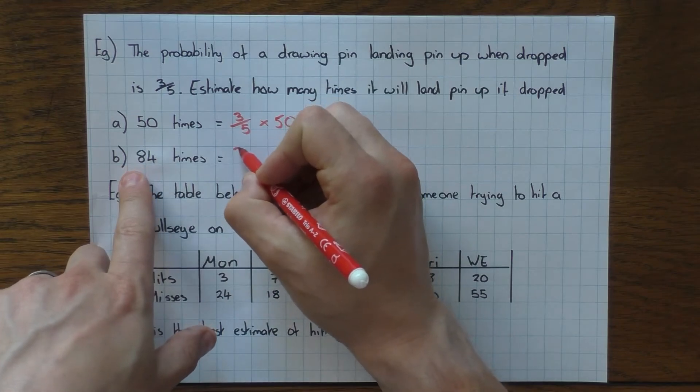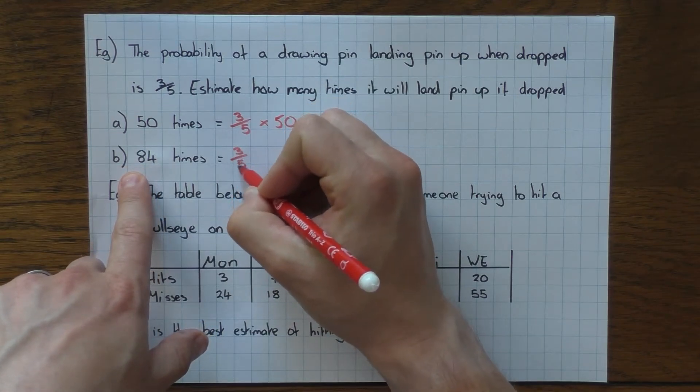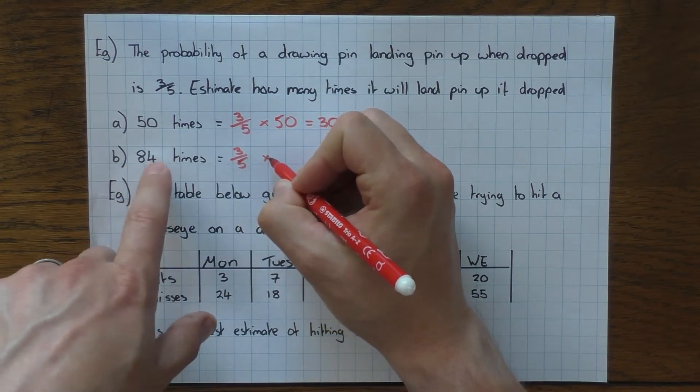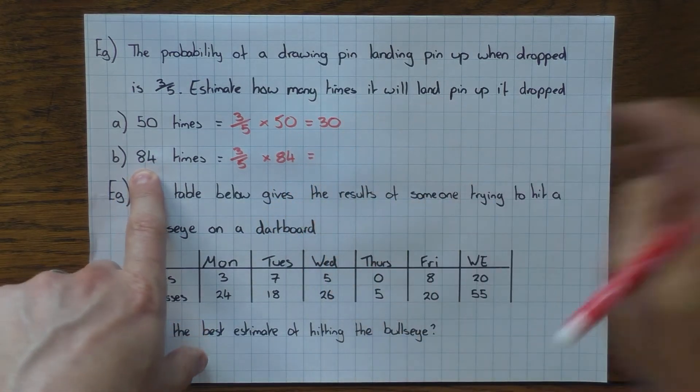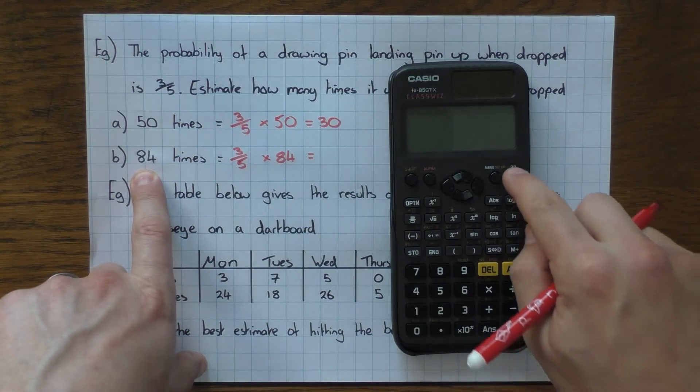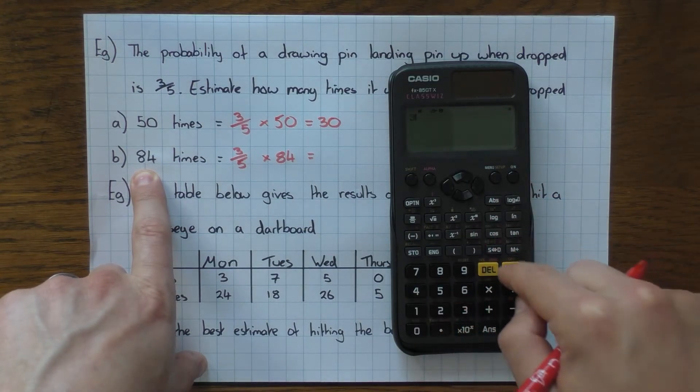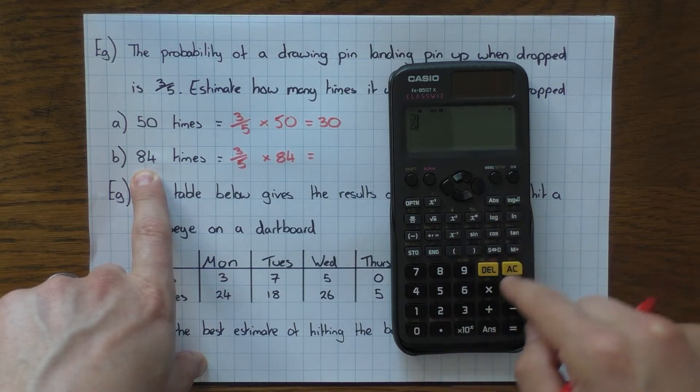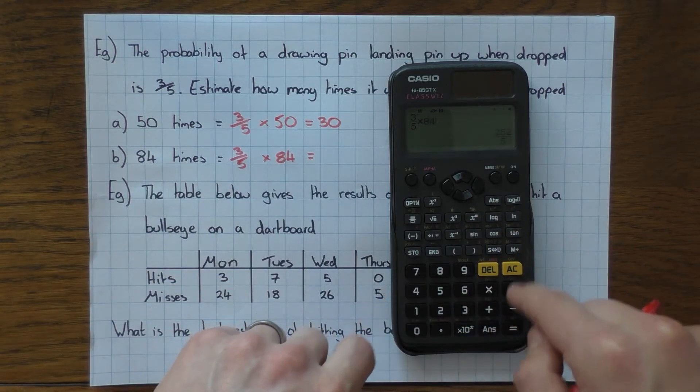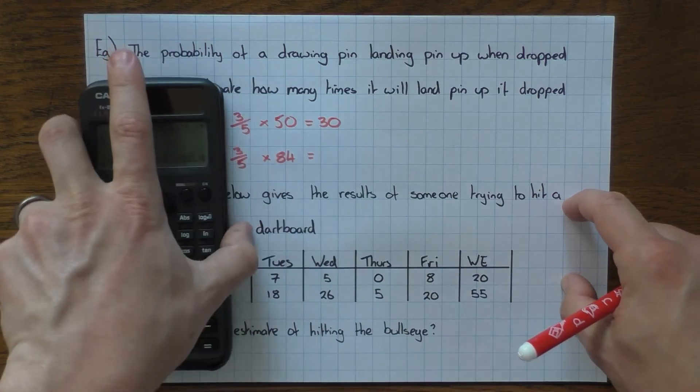What about if it was 84 times? Well, we still do the probability, which is 3 fifths. We still times it by how many times you want to know, which is 84. And this will be a little bit of a calculator job. So we have 3 fifths times by 84, and it is a decimal. It's 50.4.